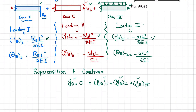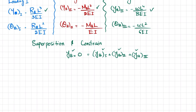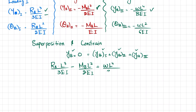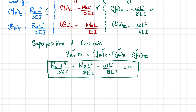Substituting the values into the deflection constraint gives Equation 1: RB·L³/(3EI) − MB·L²/(2EI) − wL⁴/(8EI) = 0. This equation contains two unknowns, RB and MB, so we cannot solve it alone.